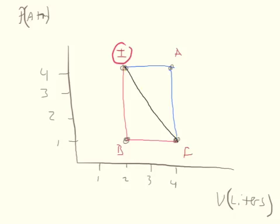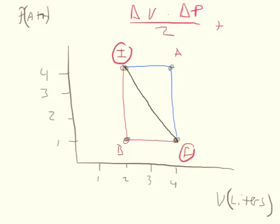For path IF, you have the area under the triangle plus the rectangular area below it all the way down to the base. So you would calculate the change in volume times the change in pressure divided by two for the triangle, and then add to that the change in volume multiplied by the final pressure for the rectangle below.